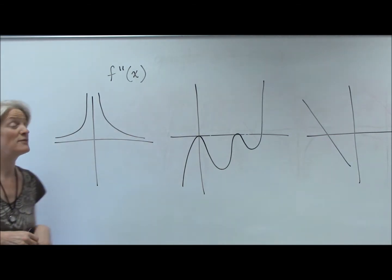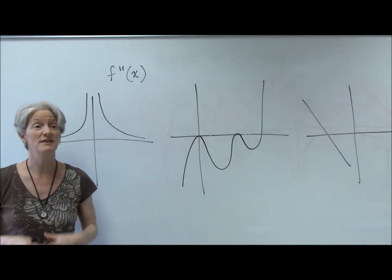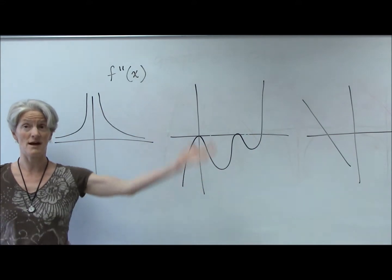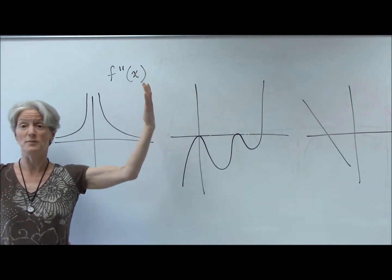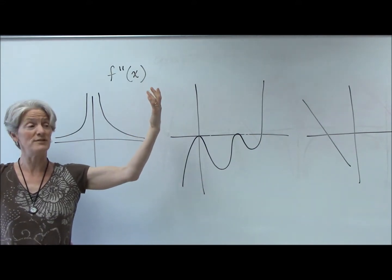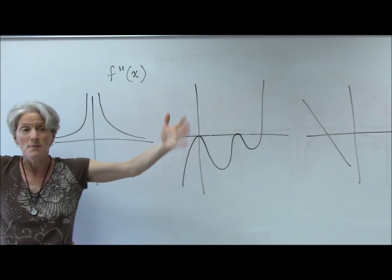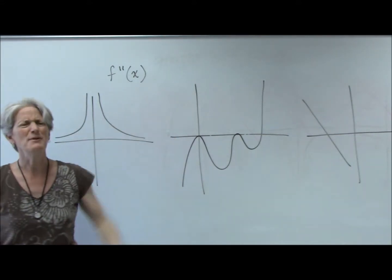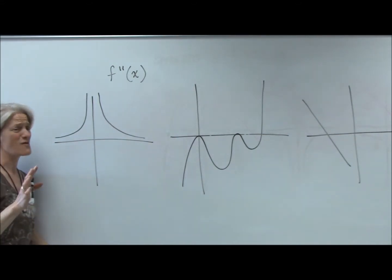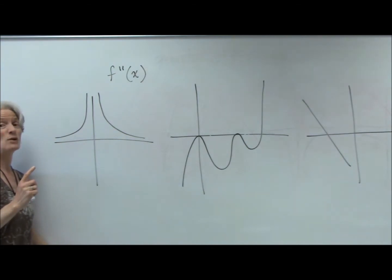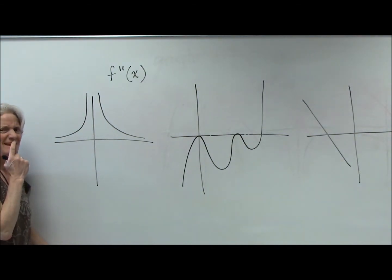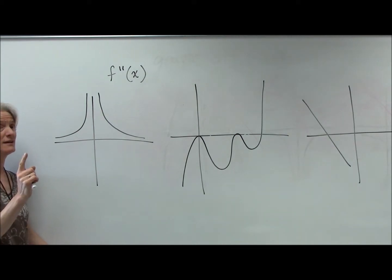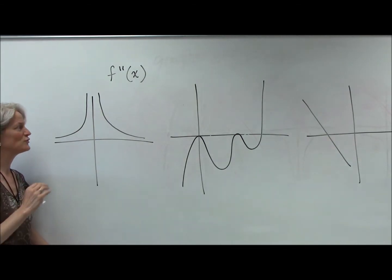When the second derivative is positive, we have a concave up — my original function would be concave up. When the second derivative is negative, my original function would be concave down. How about when the second derivative is zero or undefined? It is potentially an inflection point, but not for sure.